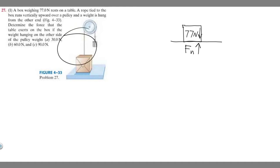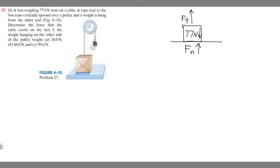We have one more force: the tension force, which acts upward on the box. If you think about it, if we put heavier and heavier weights on the other side of the pulley, eventually the box would rise off the table. So the hanging weight creates a tension force pulling upward on the box.